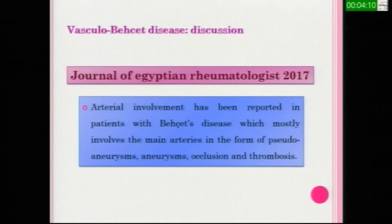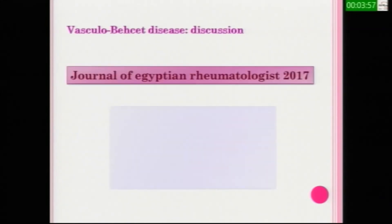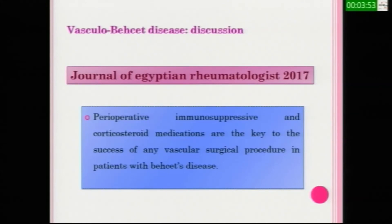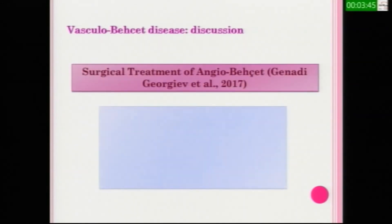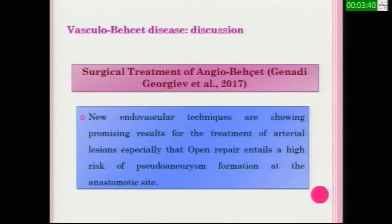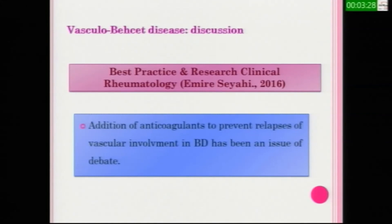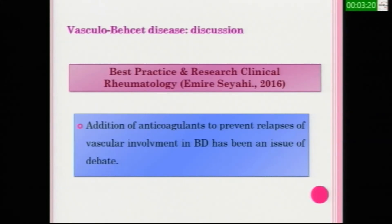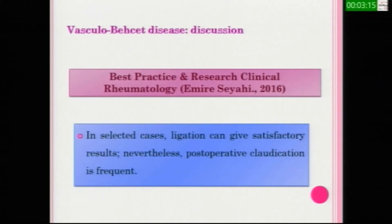In the Journal of Egyptian Rheumatology 2017, arterial involvement was reported in patients with Behçet's disease, mostly involving main arteries in the form of pseudoaneurysm, aneurysm, and thrombotic occlusion. The same article stated that perioperative immunosuppressive and corticosteroid medication are key to the success of any vascular surgical procedure. A 2017 surgical treatment article states that new endovascular techniques show promising results for arterial lesions, especially since open repair carries a high risk of pseudoaneurysm formation at the anastomotic site. Best practice guidelines note that anticoagulant addition to prevent relapses of vascular involvement remains an issue of debate, and that in selected cases, ligation can give satisfactory results, though postoperative claudication is frequent.